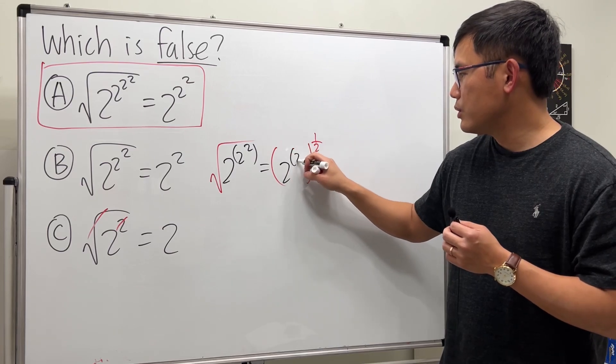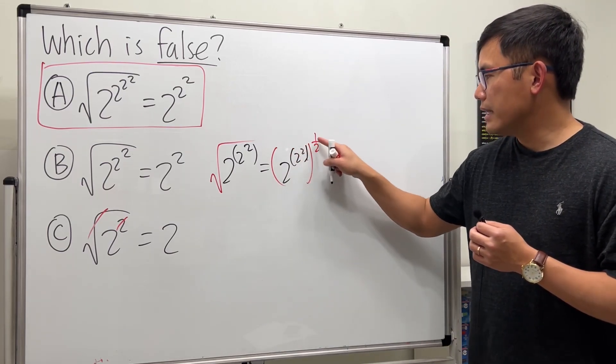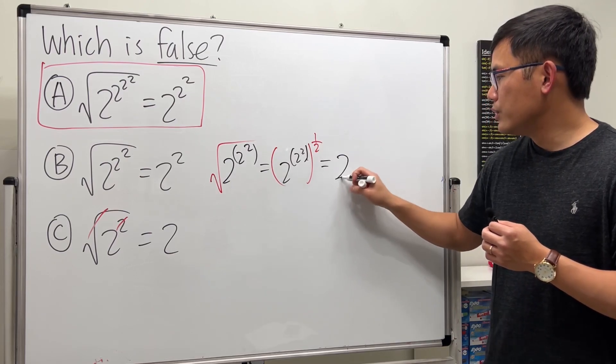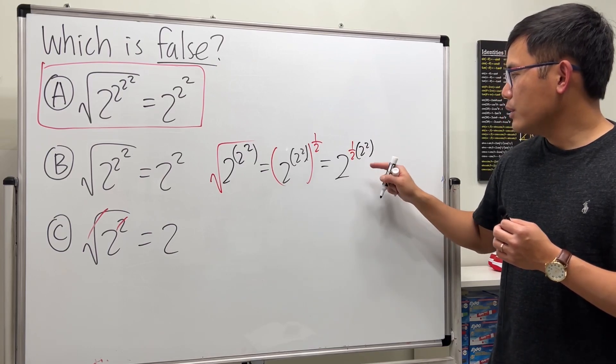So we're looking at 2 raised to 1/2 times 2^(2^2). You can use the rule of exponents - when you multiply, you add the exponents.